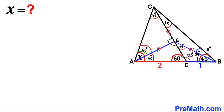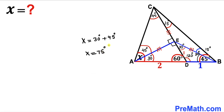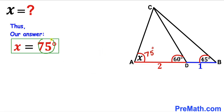In our final step, angle X is the sum of two individual angles: 30 degrees and 45 degrees. Therefore angle X equals 30 + 45 = 75 degrees. That's our final answer. Thanks for watching and please don't forget to subscribe to my channel for more exciting videos!